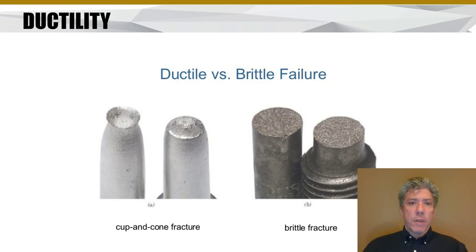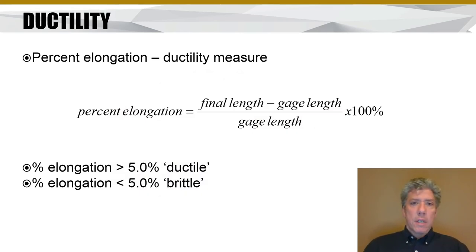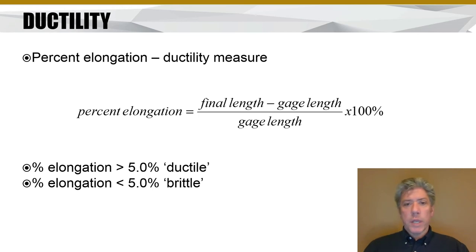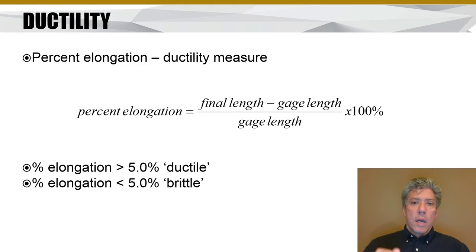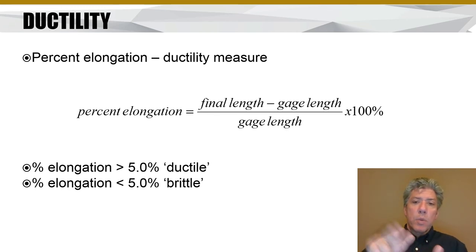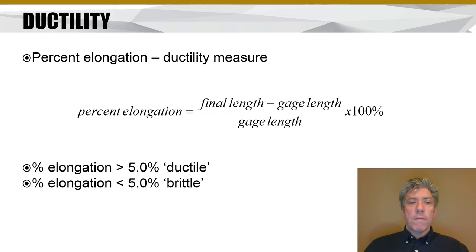We'll use percent elongation to measure ductility. Percent elongation is the final length minus the initial length, divided by the initial length — also called the gauge length — multiplied by 100%. The gauge length refers to the measured portion of the sample between two gauge points, both before and after stretching to failure. If the percent elongation is greater than 5%, we call it a ductile material; if it's less, we call it a brittle material. It's somewhat of an arbitrary cutoff, but that's what we use.